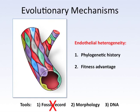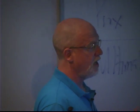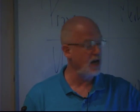Turning to endothelial cell heterogeneity as a biological trait and considering evolutionary mechanisms: there are two components — the phylogenetic history and the advantage the trait provides at the level of reproduction. Since the endothelium and cardiovascular system don't fossilize, we are left with comparative morphology, DNA sequences, and molecular phylogeny.